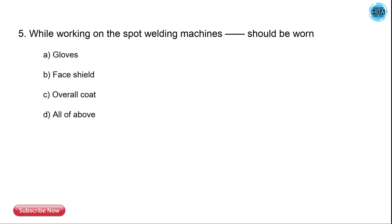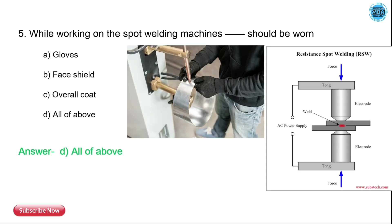The 5th question is: while working on the spot welding machine, what should be worn? The answer is all of the above — while working on the spot welding machine, gloves, face shield, and an overall coat should all be worn.